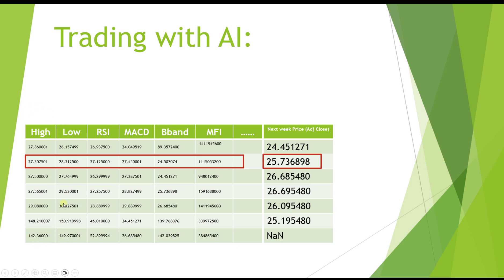We have features like high, low, open, close of the candle, RSI indicator, MACD indicator, Bollinger Band, MFI, and moving averages. Using these features we want to predict a number — in this case the next week's price, specifically the adjusted close.